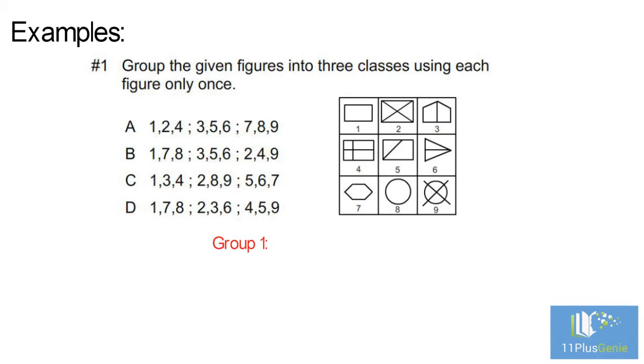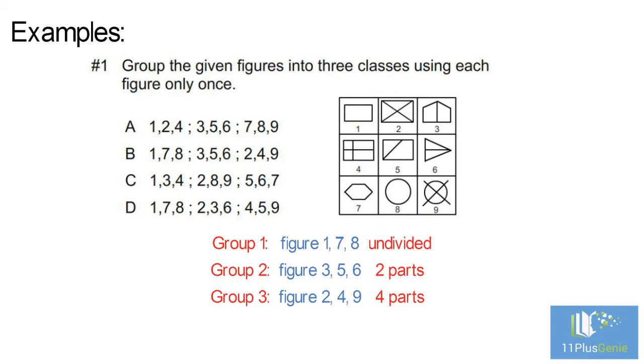Group one: figures one, seven, and eight. They are all undivided geometric shapes. Group two: figures three, five, and six. They are all divided into two parts. Group three: figures two, four, and nine. They are all divided into four parts. The correct answer is B.